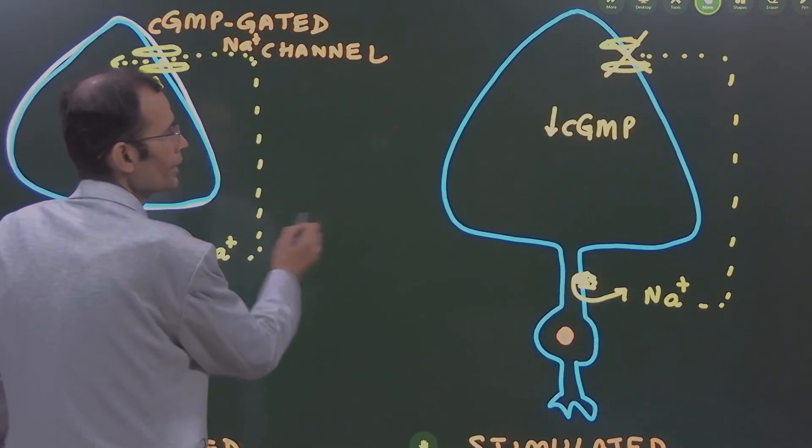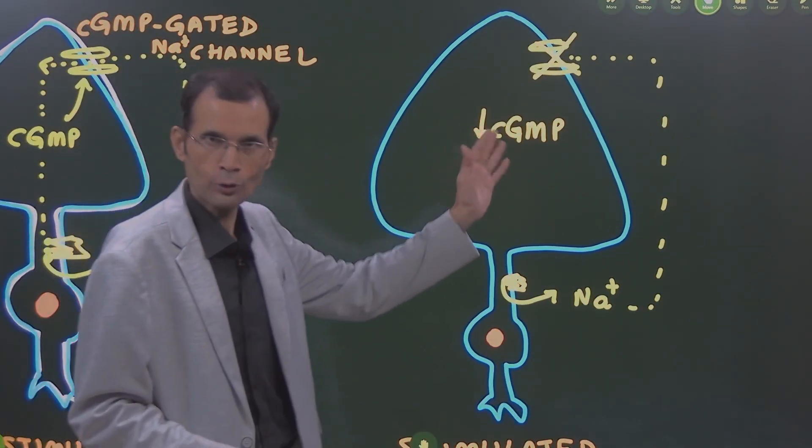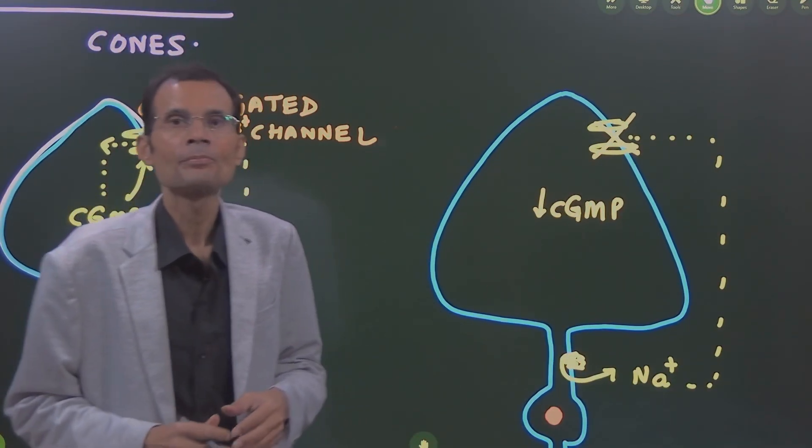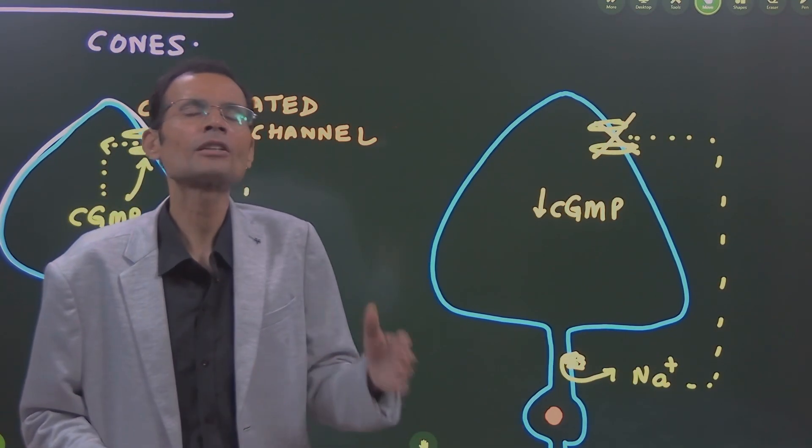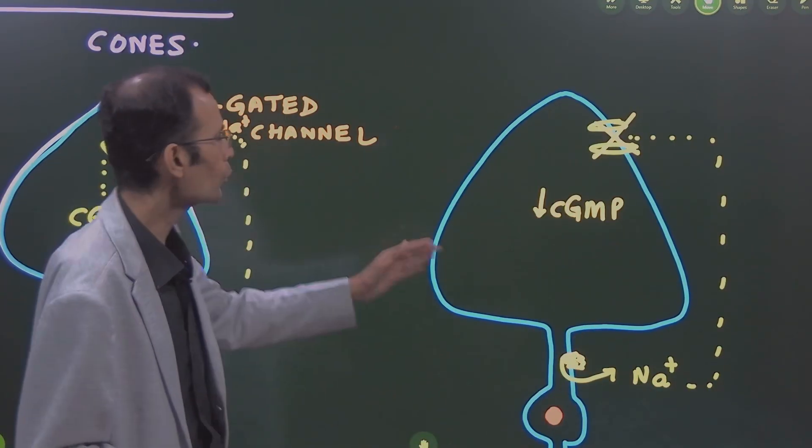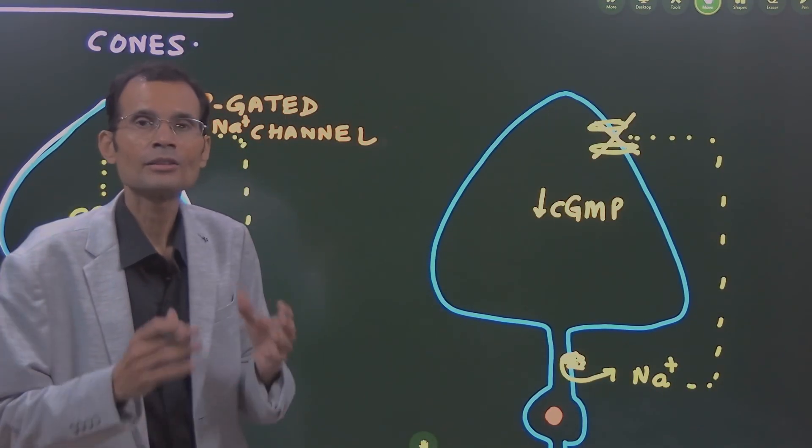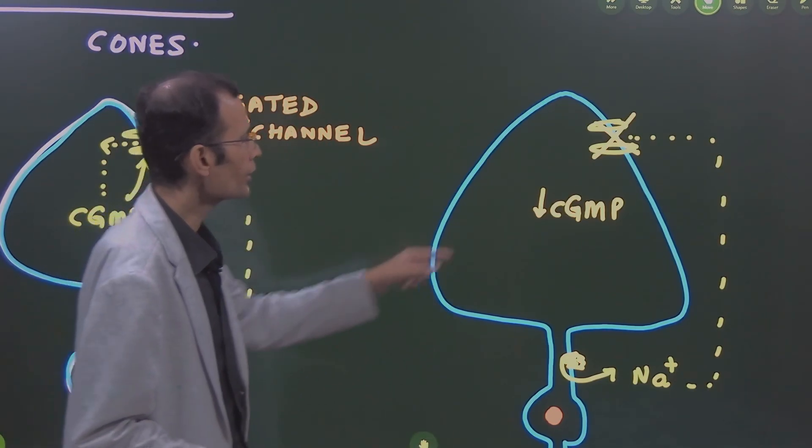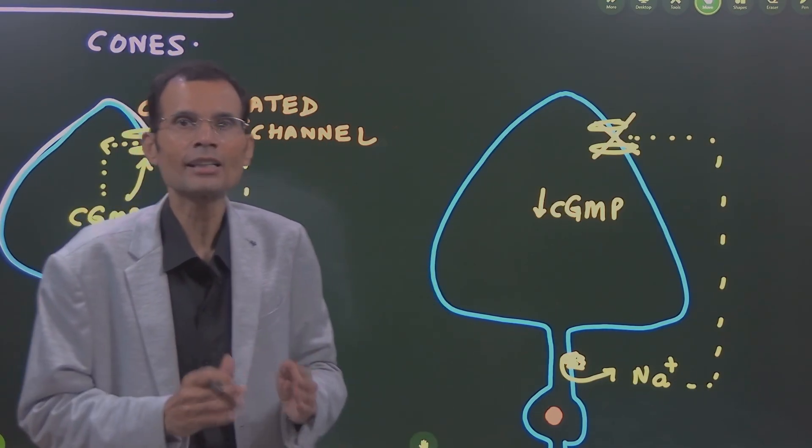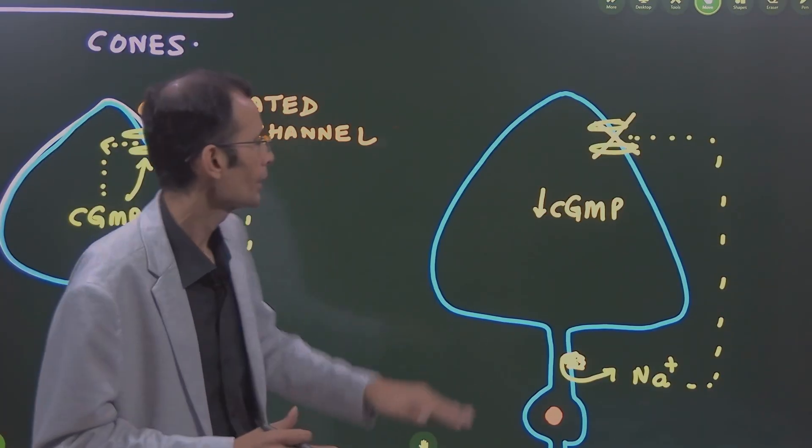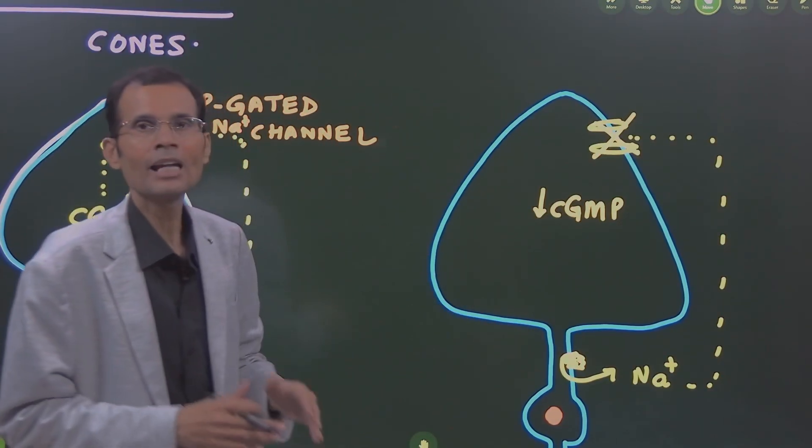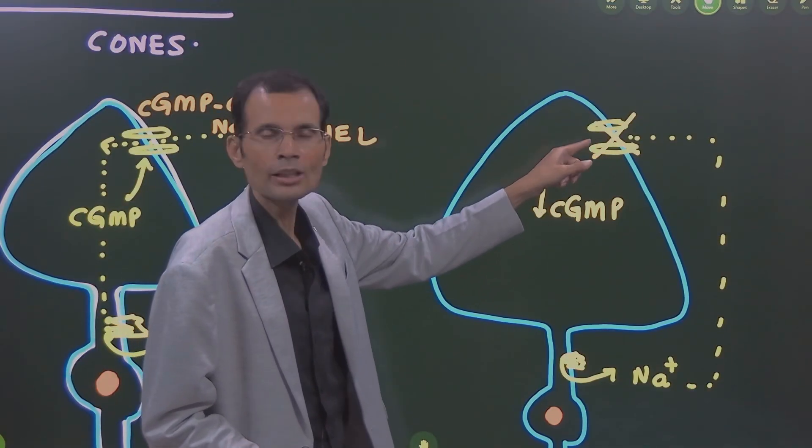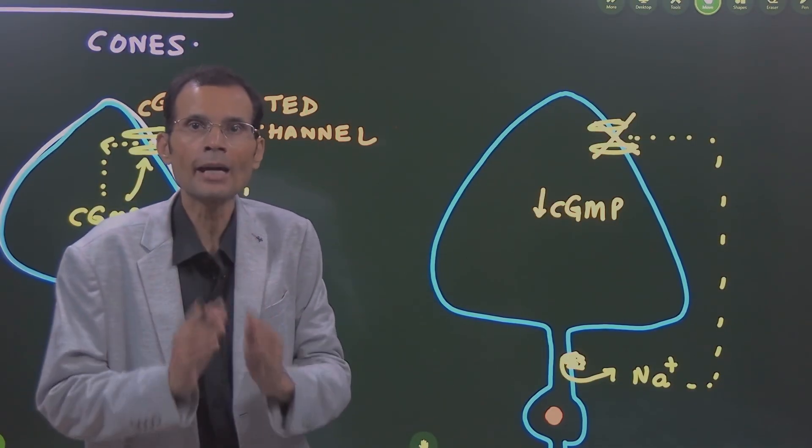When light strikes the rod or cone, there is bleaching of the rhodopsin or color-sensitive pigment in the cones, activation of transducin, and eventually it decreases the cyclic GMP levels. Decreased cyclic GMP levels mean this cyclic GMP gated sodium channel cannot be kept open.